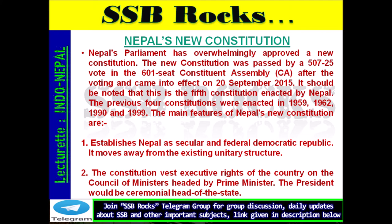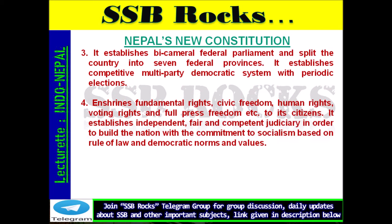The main features of Nepal's new constitution are: 1. It establishes Nepal as a secular and federal democratic republic, moving away from the existing unitary structure. 2. The constitution vests executive rights on the Council of Ministers headed by the Prime Minister; the President would be a ceremonial head of state. 3. It establishes a bicameral federal parliament and splits the country into seven federal provinces with a competitive multiparty democratic system and periodic elections. 4. It enshrines fundamental rights including civic freedom, human rights, voting rights, and full press freedom, and establishes an independent and fair judiciary committed to socialism based on rule of law and democratic norms.